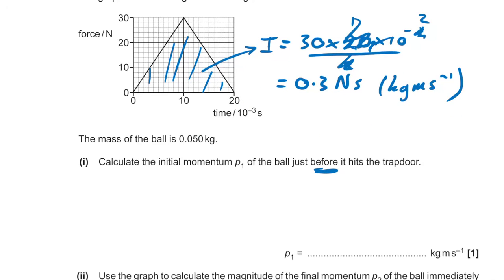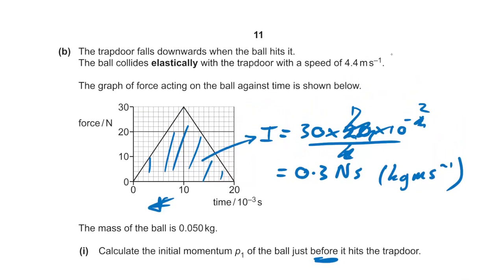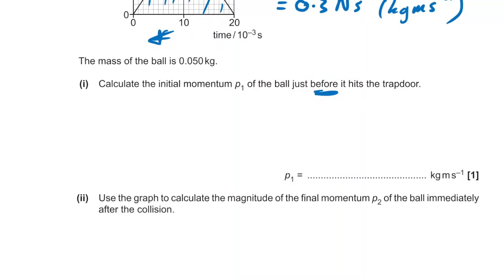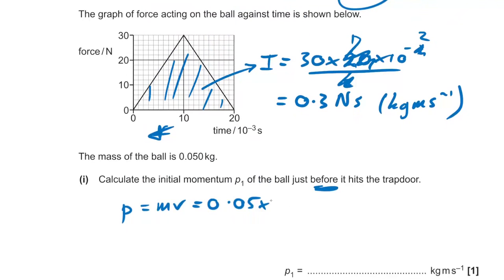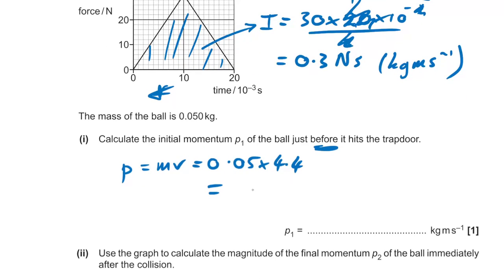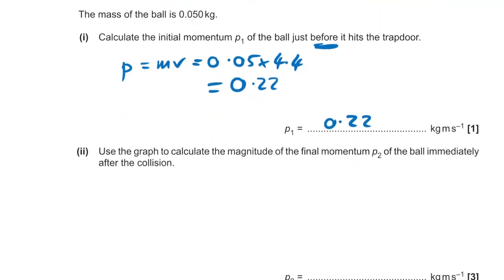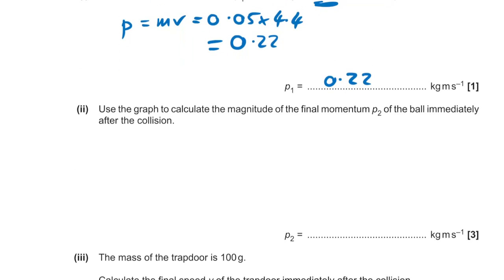Calculate the initial momentum just before it hits the trapdoor: p = mv = 0.05 × 4.4 = 0.22 kg·m/s.